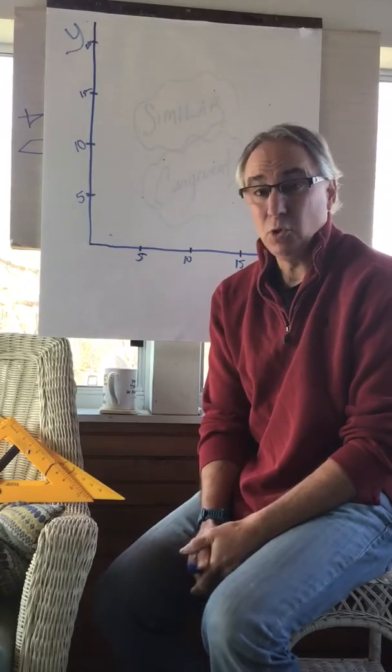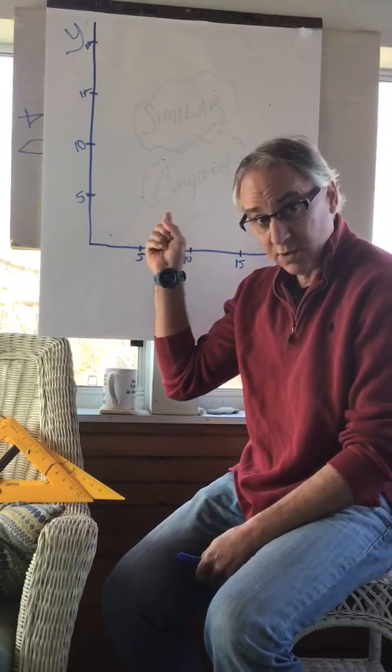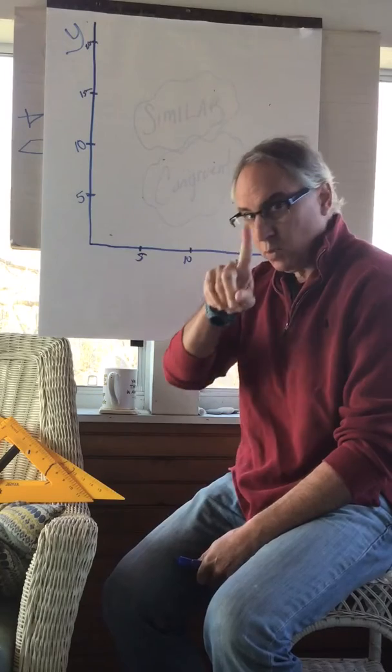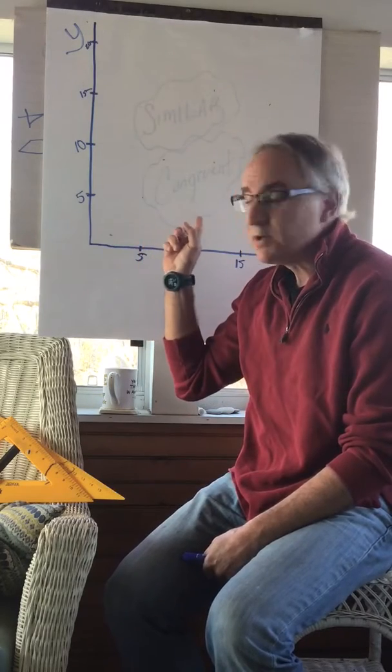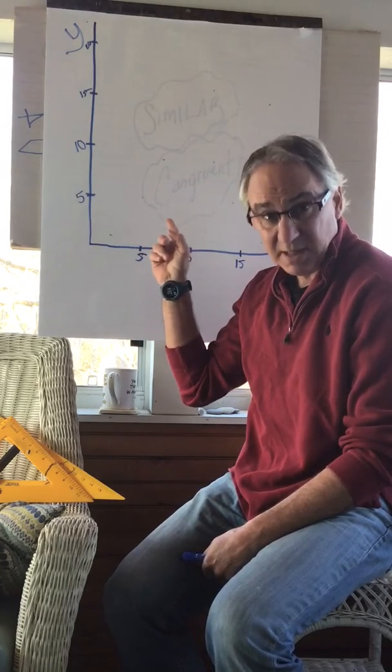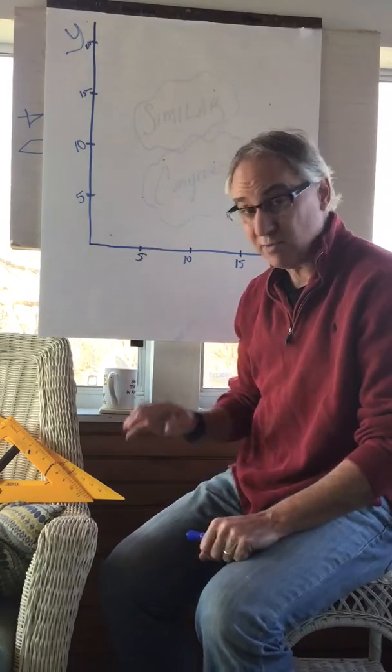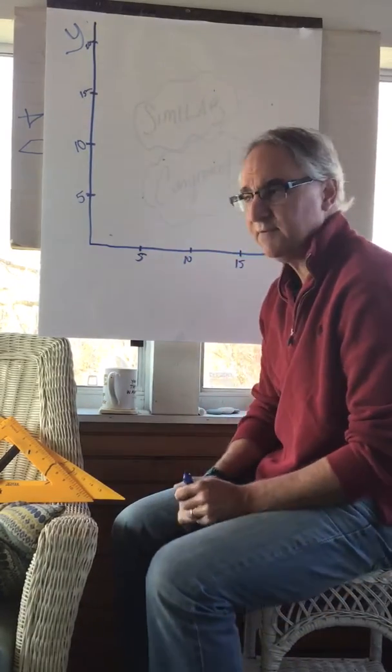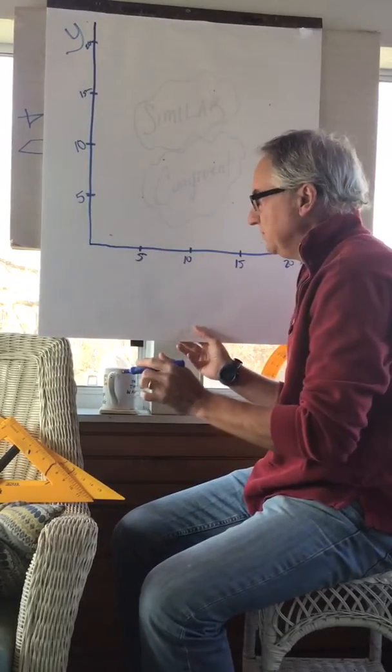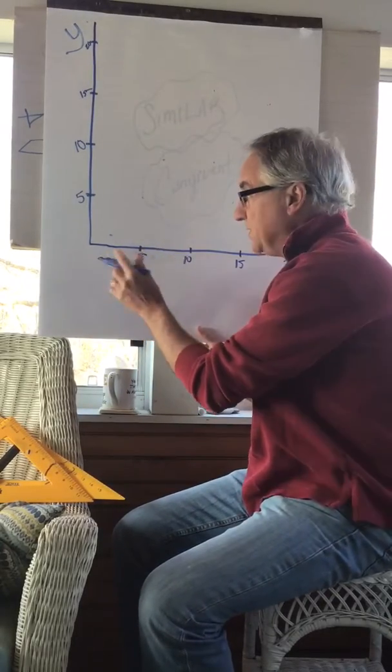Back to the coordinate grid, quadrant one only. We're gonna talk a little bit about the polygons that we talked about the other day. We're gonna talk a little bit about the triangles that we talked about before we left.